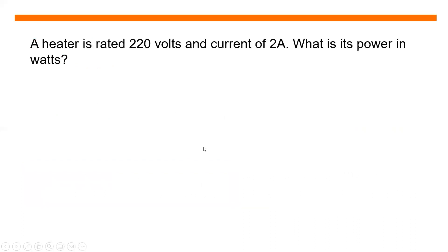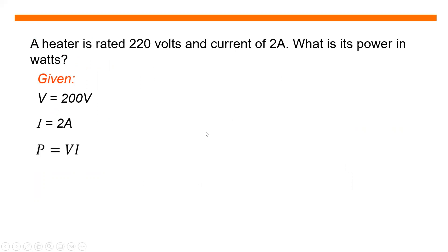Sample problem: a heater is rated 220 volts and current of 2 amperes. What is its power in watts? Given: volts equals 200 volts, I equals 2 amperes. Then power equals V multiplied by I, that is 200 multiplied by 2 amperes, giving 400 watts.